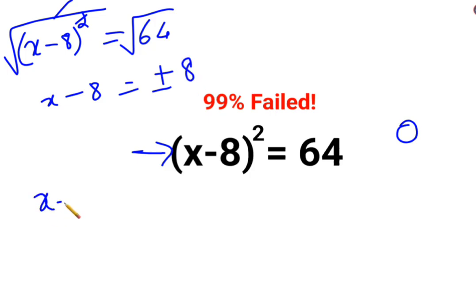So we have two scenarios: x minus 8 equals to 8, or x minus 8 equals to minus 8. So here when I shift the 8 on the other side we have 8 plus 8.